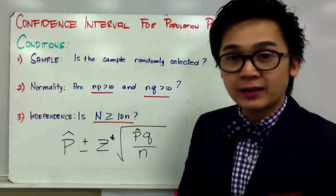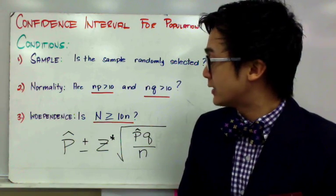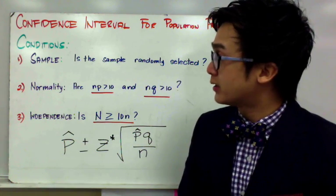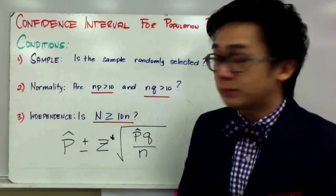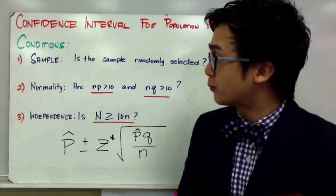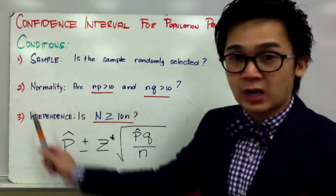And for independence, we need to have big N should be greater than or equal to 10 times your sample size. If all three conditions are satisfied, we'll be able to trust our computation.